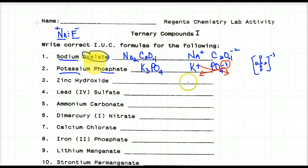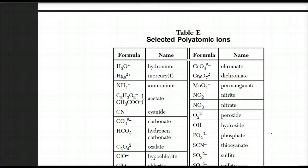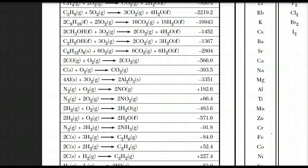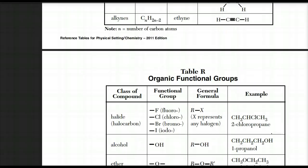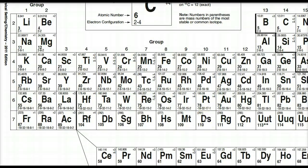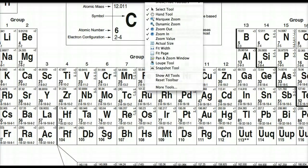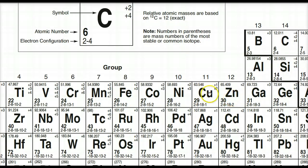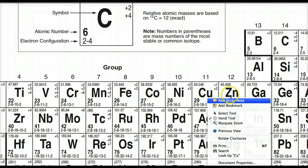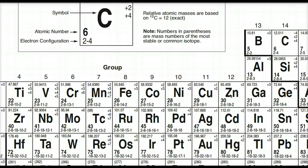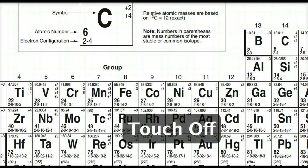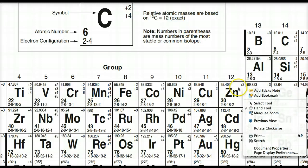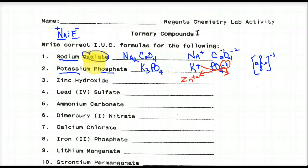Zinc hydroxide. We know that zinc is plus two. You're going to have to look at your reference table in terms of what these charges become or what they can become to become stable. Zinc only becomes plus two. For those in other courses, you should know that zinc likes to become plus two because it's going to lose the S electrons, not the Ds. Hydroxide is a polyatomic ion.